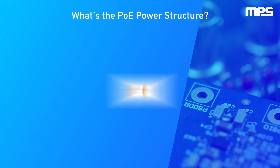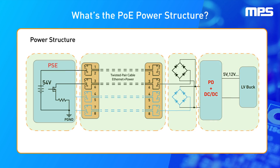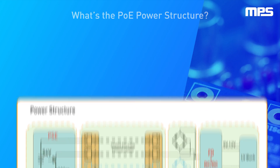What's the PoE structure? The PSE takes the power from an adapter, then sends it to the PD. The power and signal are transmitted through the Ethernet cable at the same time. Normally, the cable is a twisted pair. A rectifier circuit is necessary to adjust the voltage polarity before it goes into the PD device. After the PSE power is classified, the PD sends the same amount of power, as defined by the PoE standard, to the following circuit. Normally, an isolated DC-to-DC converter converts the 48 volts to a lower voltage for other circuits usage.